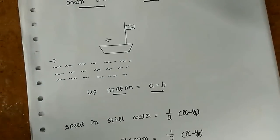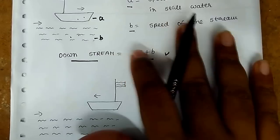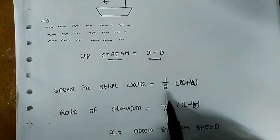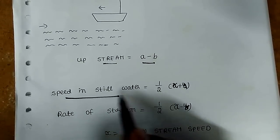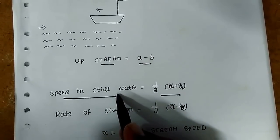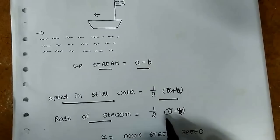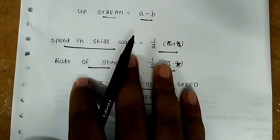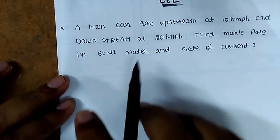So the first step of this concept: if you use this formula, the rate of the boat in still water is half of x plus y, and the rate of the stream is half of x minus y. So x is downstream speed, y is upstream speed. This formula is the general concept. Some examples are easy — let's see one example.